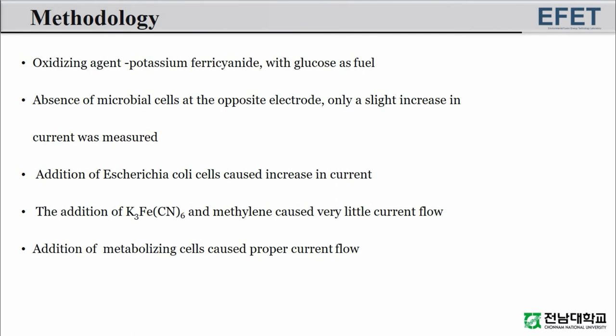Finally, a test was made of the effect of a strong oxidizing agent, potassium ferrocyanide, on the system with glucose as fuel. When one milligram of potassium ferrocyanide was added to the oxygen half cell in the absence of microbial cells at the opposite electrode, only a slight increase in current was measured. However, when Escherichia coli cells were added to the biological half cell, the current increased markedly from 0.1 to 1.6 milliamperes in 30 minutes. The addition of large amounts of potassium ferrocyanide at the oxygen electrode and of methylene blue at the biological electrode resulted in very little current flow unless metabolizing cells were also present at the biological electrode.